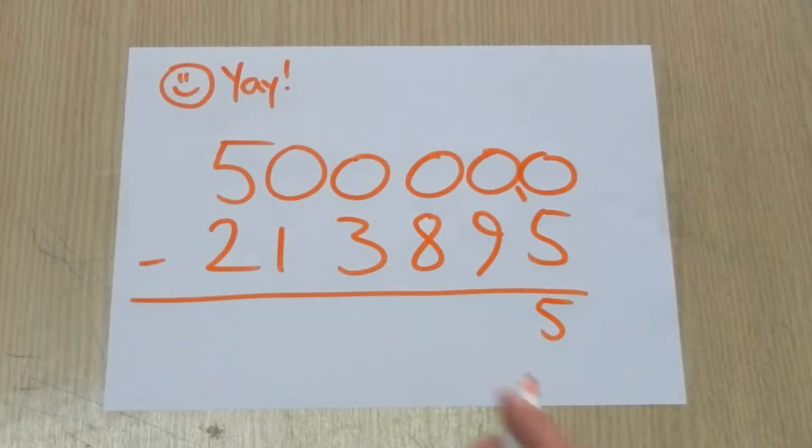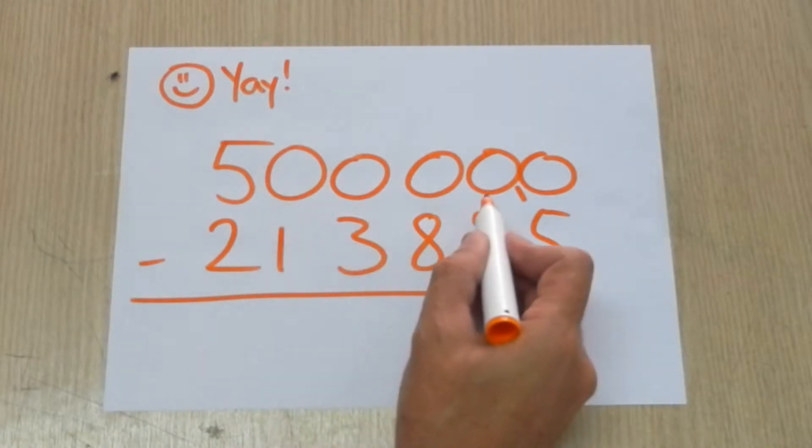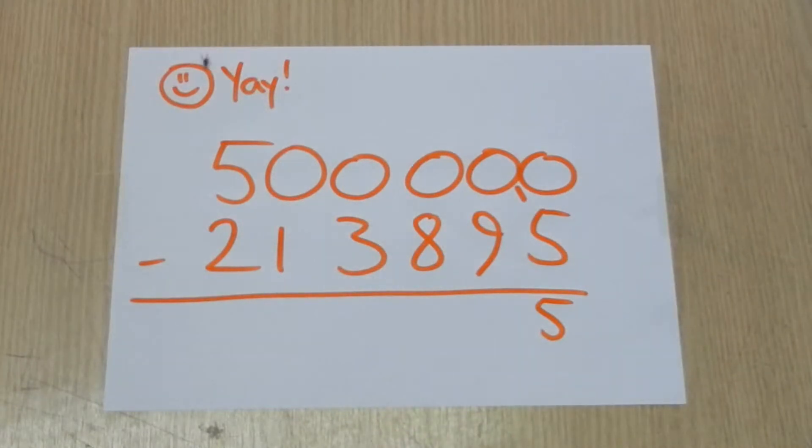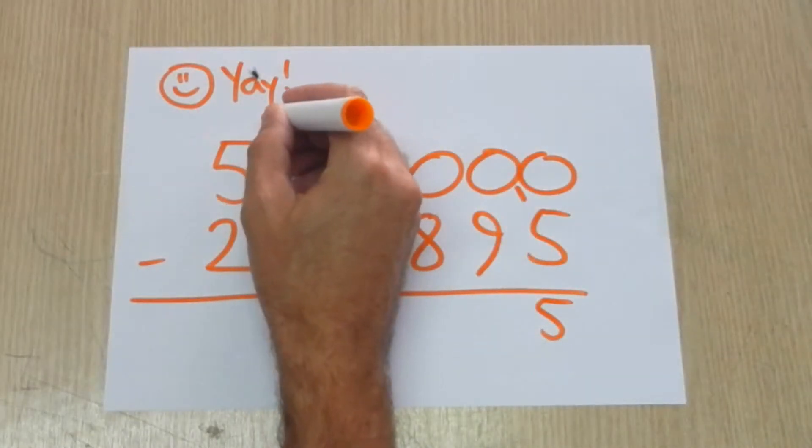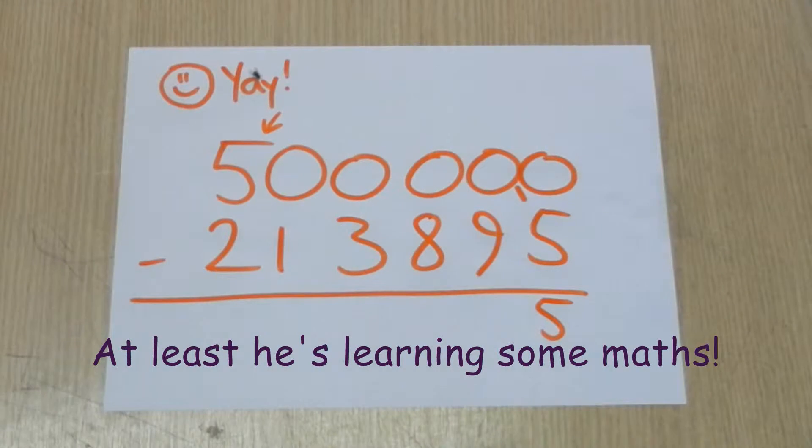The new problem is that there is nothing to borrow from. We have to go all the way to 100,000, wait, 100,000.